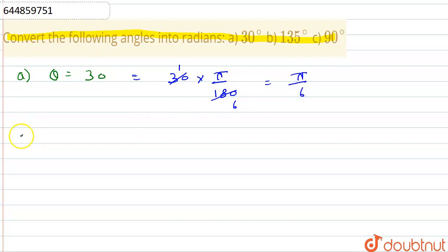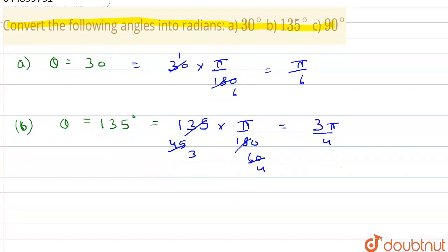The second part is theta equals 135 degrees. So 135, that is the given angle, into pi by 180. Now 3 into 60 is 180 and 3 into 45 is 135. 15 threes are 45 and 15 fours are 60. So finally we will get 3 pi by 4. This is the answer of the B part.